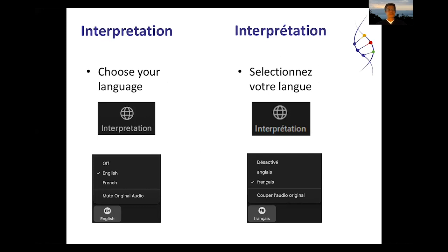The session will be translated. You have the choice between English and French. If you look at the bottom of your Zoom page you can see the interpretation button, and there you have options between English or French language, or you can just not choose any language and you will hear the original languages spoken by the participants.